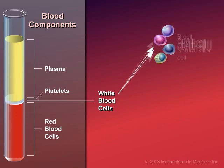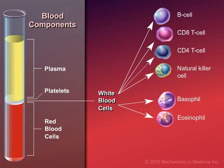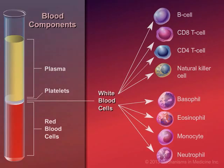There are five major types of white blood cells: lymphocytes, or B-cells and T-cells, basophils, eosinophils, monocytes, and neutrophils.